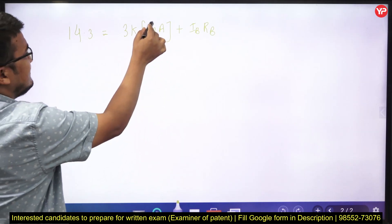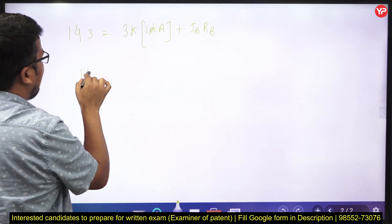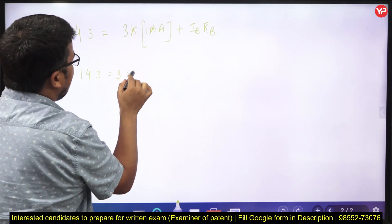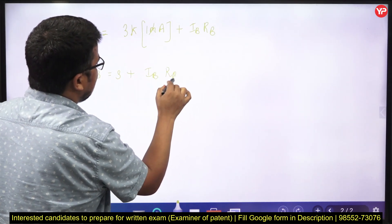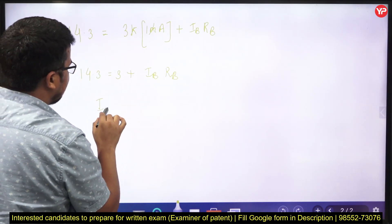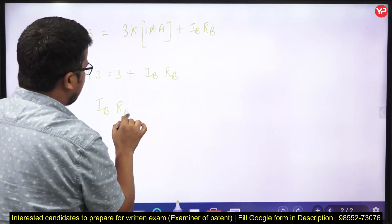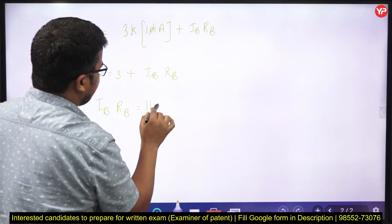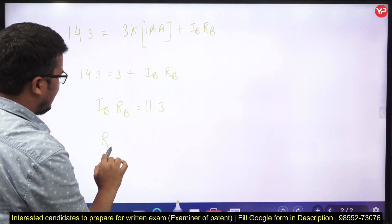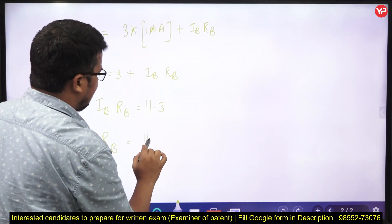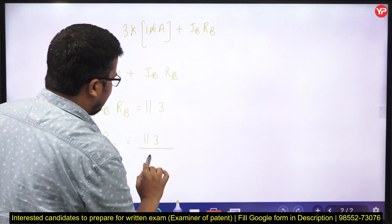14.3 is equal to 3 kilo into 1 milliampere plus IBRB. From here what I can do? I can conclude my relation is 14.3 is equal to 3K into 1 milliampere. This is 3K into 1 milliampere plus IB multiplied by RB. This is the calculation. This milli and kilo will cancel. I can write 14.3 is equal to 3 plus IB multiplied by RB. And since we can write it, IB RB is equal to 11.3.